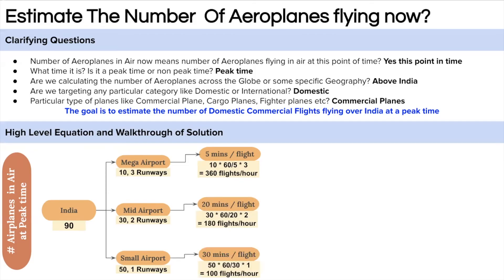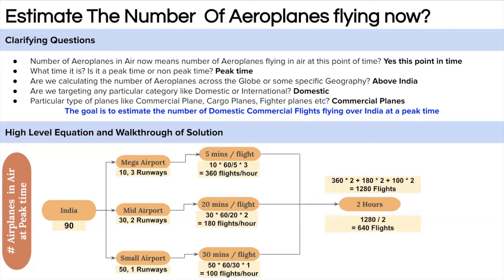Similarly, we do the same calculation for mid-size and mini airports. Now since we assumed every flight in India is of average length 2 hours, in 2 hours we would have close to 1,280 flights that take off and land at peak time. We then divide by 2, because we want only the flights that have taken off — not landed — assuming the number of takeoffs and landings are roughly equal. This gives around 640 flights in the air at peak time, which is also the maximum number of flights over India at any given time.